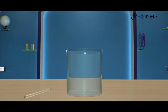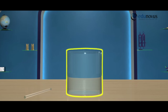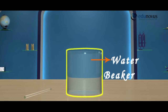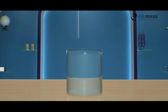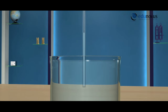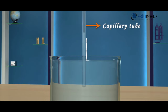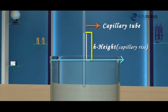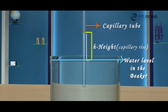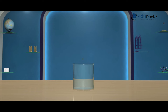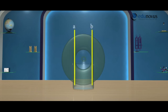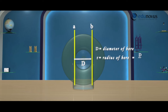Surface tension is the tangential force exerted by the surface of the liquid per unit length. Take a beaker containing water. When you dip a capillary tube in the water vertically, the water level rises in the capillary tube above the water level in the beaker and remains constant due to capillarity. Let h be the height of the capillary rise, d be the diameter of the capillary tube, and half of the diameter gives the radius r of the capillary tube.